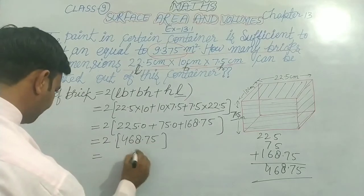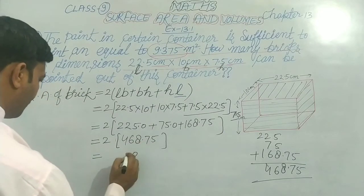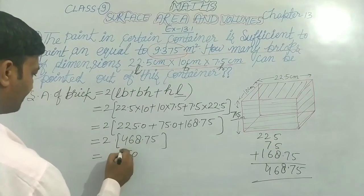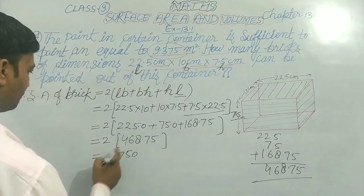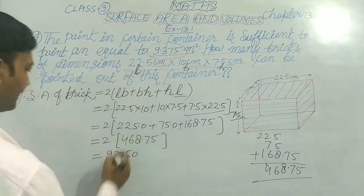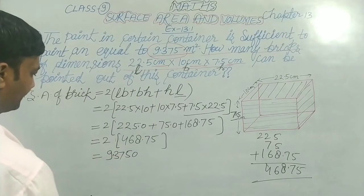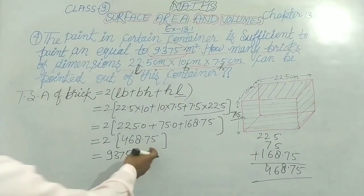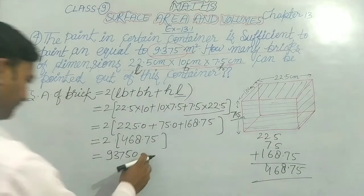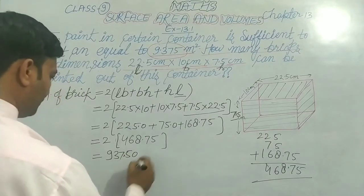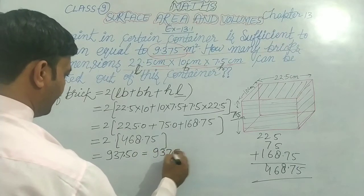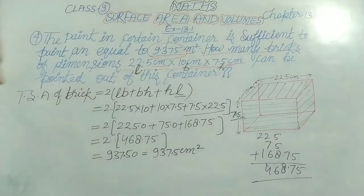So after three numbers we put the decimal point. After three digits we place the point, so we get 9375.7 square — removing the zero we get 9375.7 cm square. Clear, any problem so far?